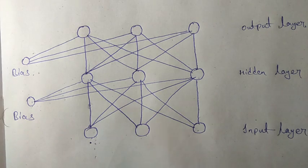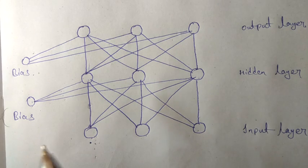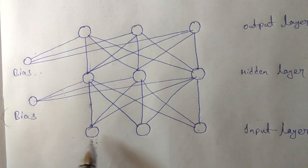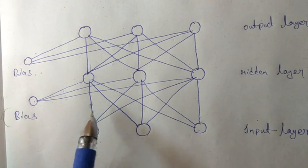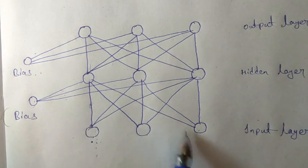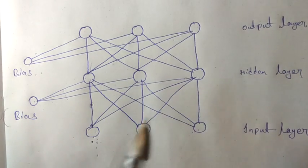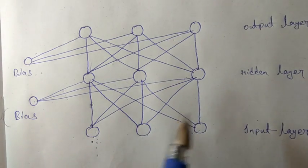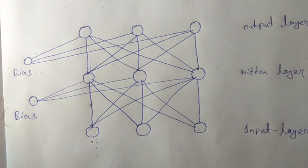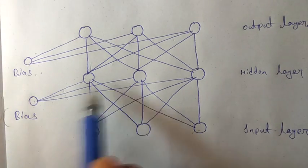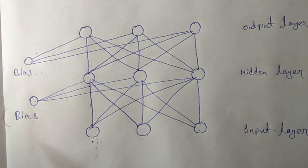I will tell you how back propagation works generally. Let us consider this neural network. It consists of three layers: one input layer, one hidden layer, and one output layer. Every layer consists of three neurons, and there is also a bias which we are giving.